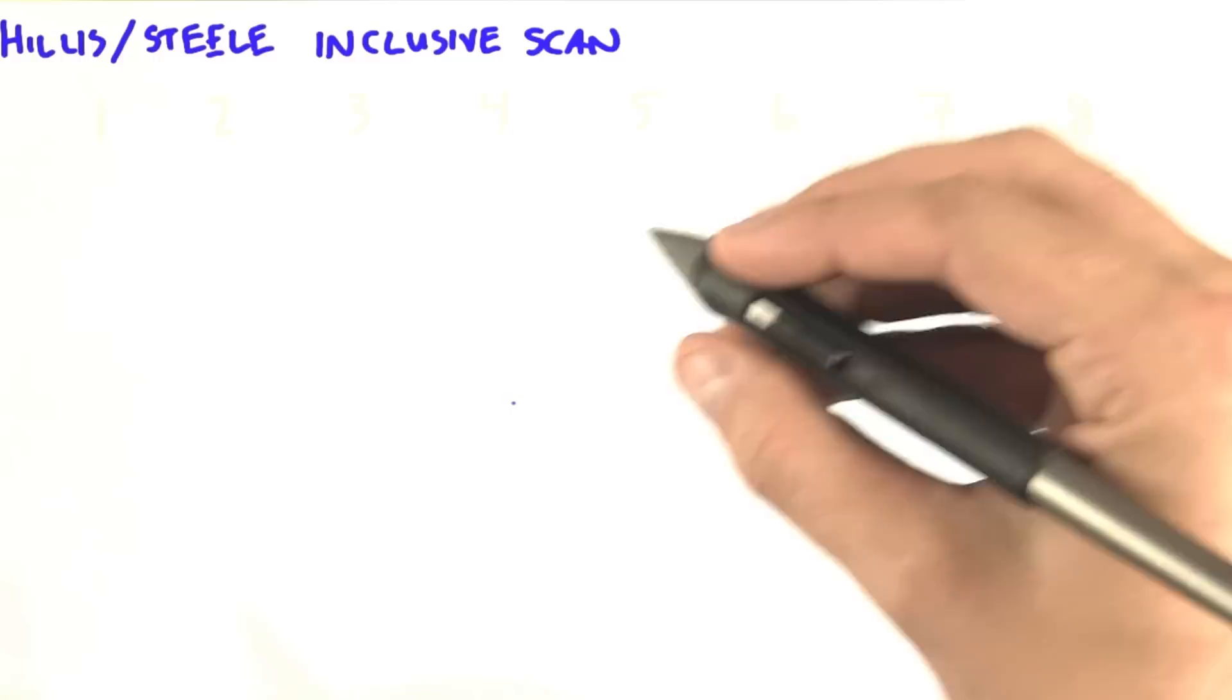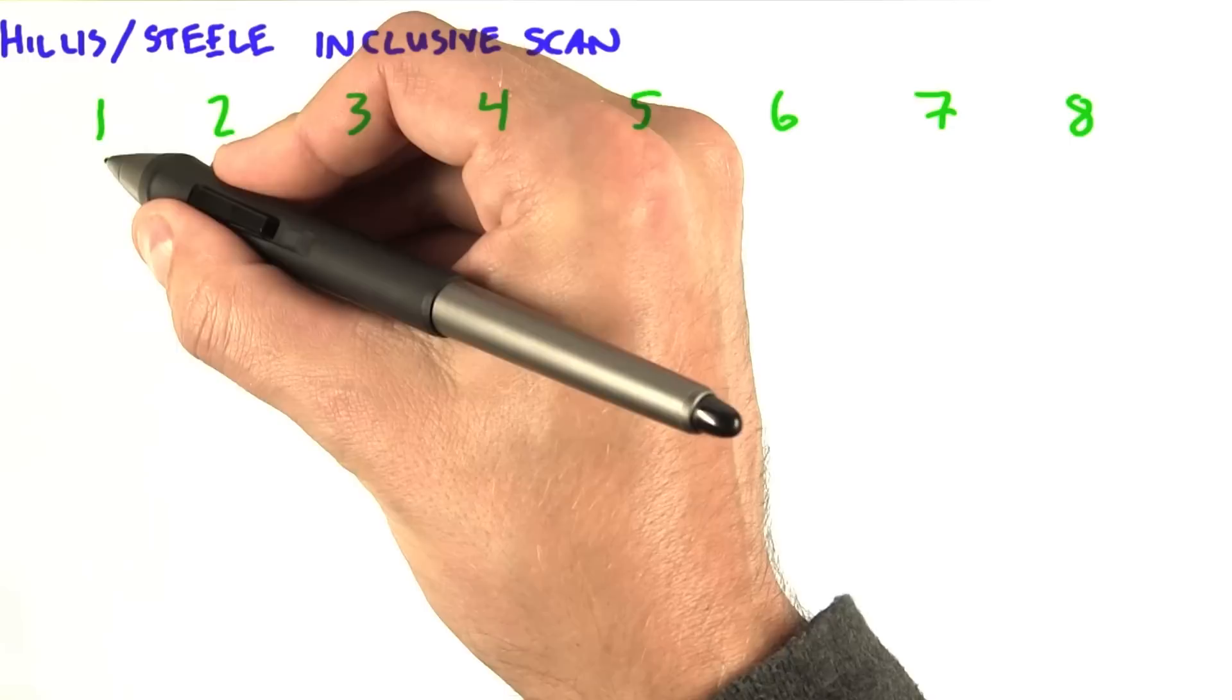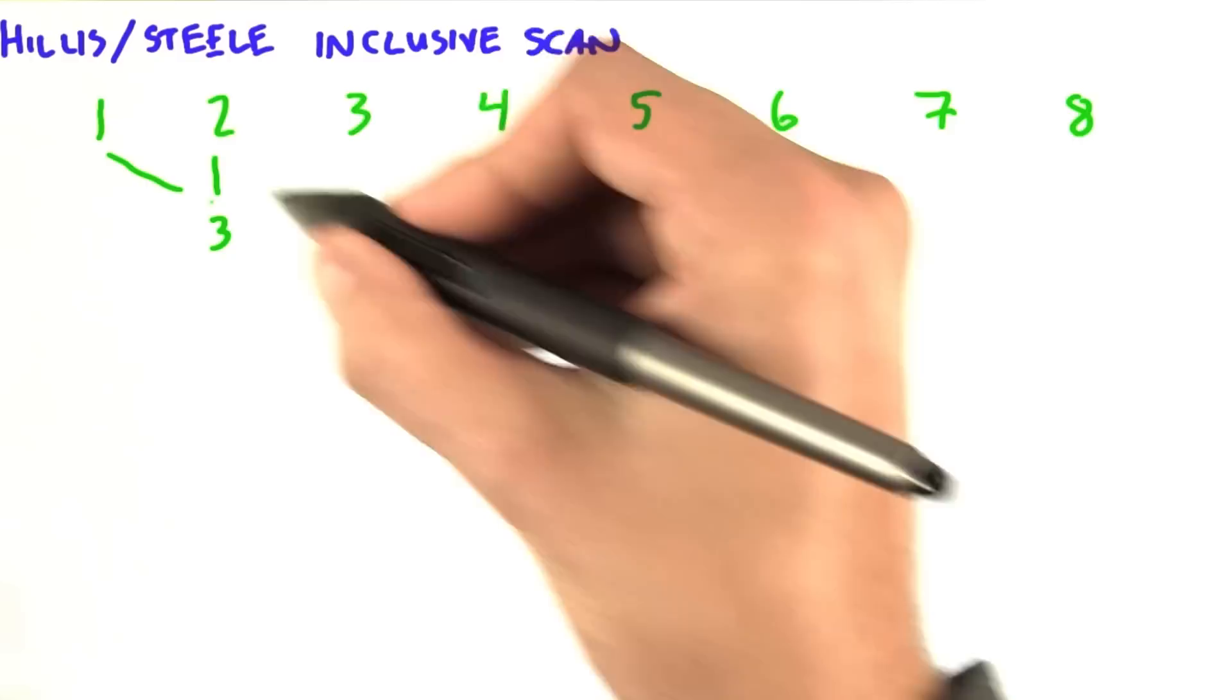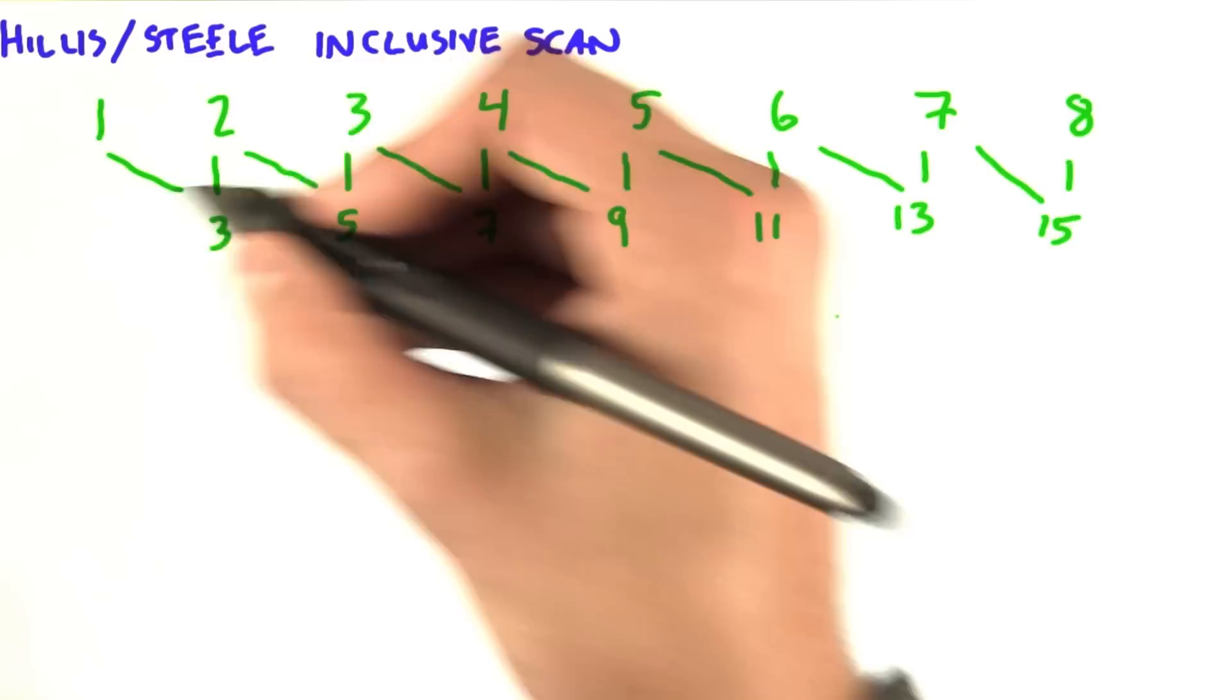So the first stage of this algorithm involves adding yourself to your neighbor 1 away. So for instance, 1 plus 2 is going to give you 3, 2 plus 3 is going to give you 5, and so on. Then we come back to the beginning, and anything that doesn't have a left neighbor we just copy its value down.